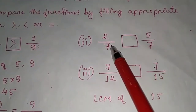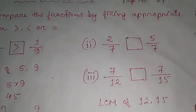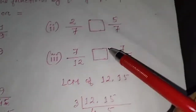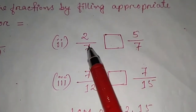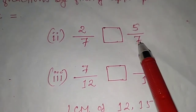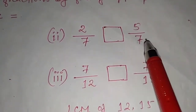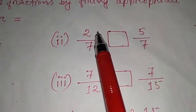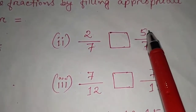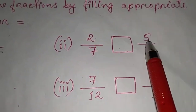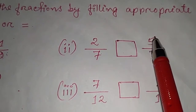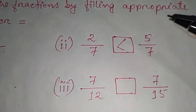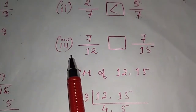Number 2: compare 2/7 and 5/7. You can see the denominators are already the same (both 7), so we only need to consider the numerators. The numerators are 2 and 5. Obviously 5 is greater, so we put the greater-than sign: 5/7 > 2/7.